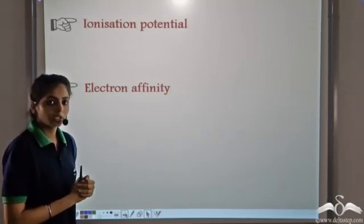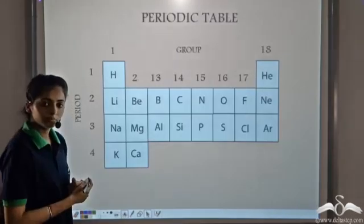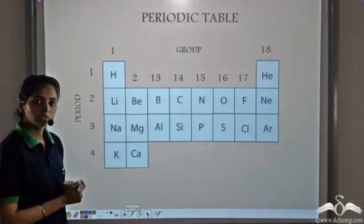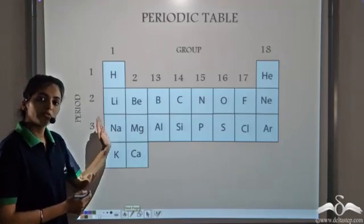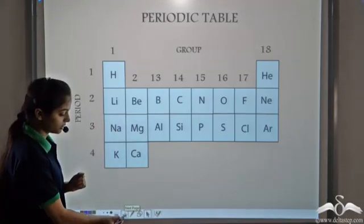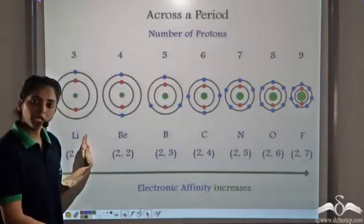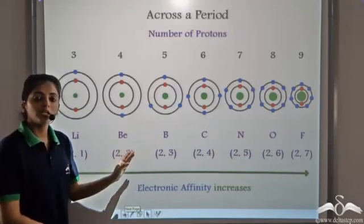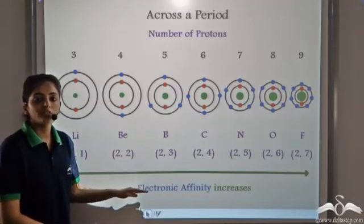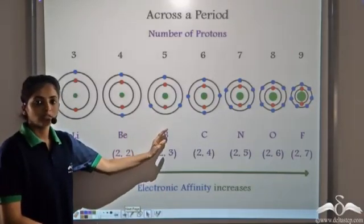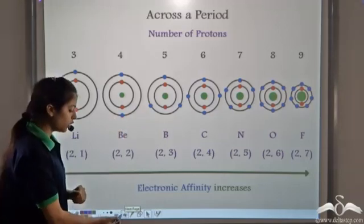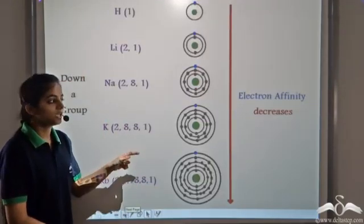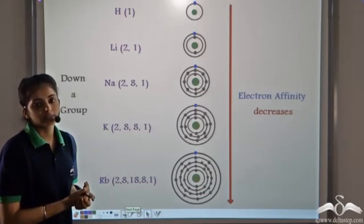Let's see how electron affinity varies in a periodic table. From left to right in a period, the electron affinity increases. And from top to bottom in a group, the electron affinity decreases.